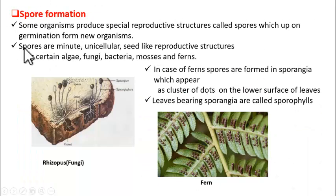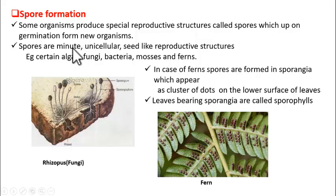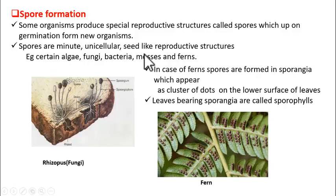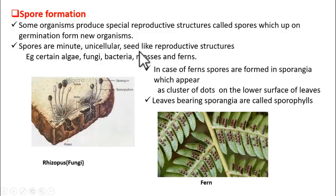What is spore formation? In some organisms like algae, fungi, bacteria, and some flowering plants like mosses and ferns, we find the production of special reproductive structures called spores. These spores are minute — very small — unicellular, meaning made up of one cell, and seed-like. Seed-like in the sense that when they fall on a suitable place, they germinate to form the whole organism, just like seeds of plants grow into new plants when conditions are suitable.